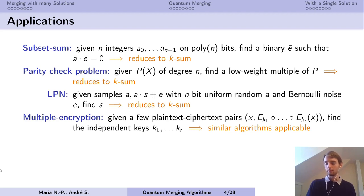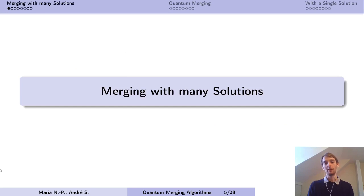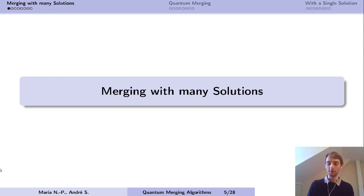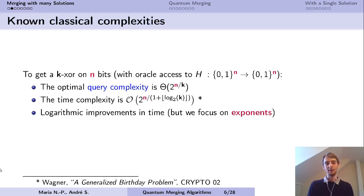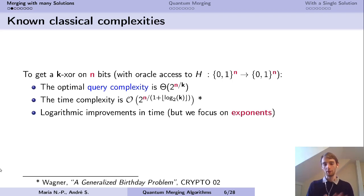There have been many works on this topic, but we're going to focus on the time complexity — specifically on the exponents — so we're going to forget about all the logarithmic improvements. We actually need roughly two results. The first is that the optimal query complexity is 2 to the n over k, because if you make 2 to the n over k queries to h, then you can build 2 to the n k-tuples and have k-XOR equal to 0 with high probability. The second is the time complexity for a general k in the many-solution case, given by Wagner's algorithm.